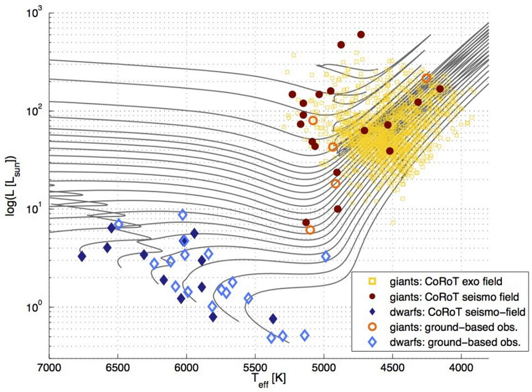In the field of stellar evolution, a blue loop is a stage in the life of an evolved star where it changes from a cool star to a hotter one before cooling again. The name derives from the shape of the evolutionary track on a Hertzsprung-Russell diagram, which forms a loop towards the blue side of the diagram.